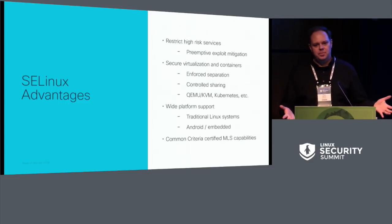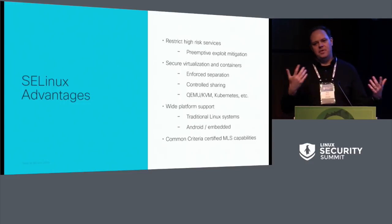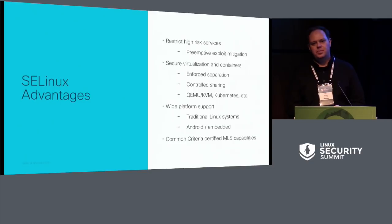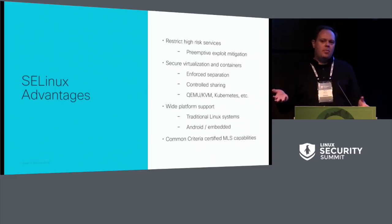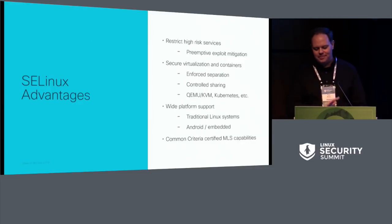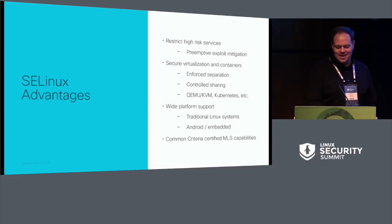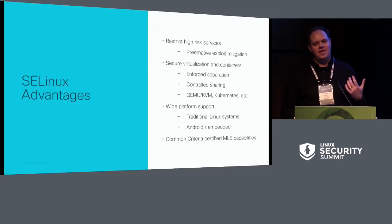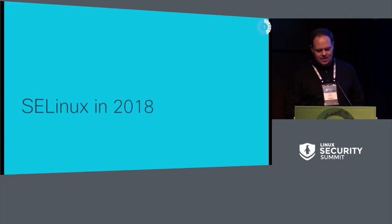We talked about wide platform support - you see SELinux on servers, you see it on laptops, we already talked about Android, and you see it increasingly in all the various different network appliances that are popping up. It's pretty much everywhere, thanks to that flexibility we talked about earlier. Last but not least is Common Criteria MLS capabilities. If you've never gone through a Common Criteria evaluation, I think everybody should go through it once and then walk away - it's a very interesting experience. The reason I put this on the slide is that SELinux has gone through multiple third-party security evaluations over the years, so it's got a really good pedigree.